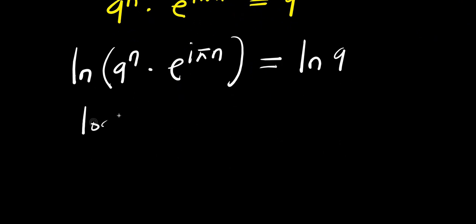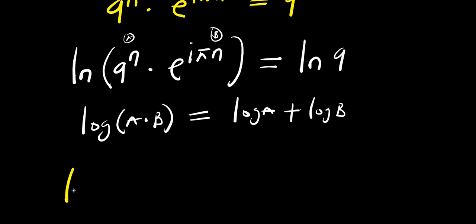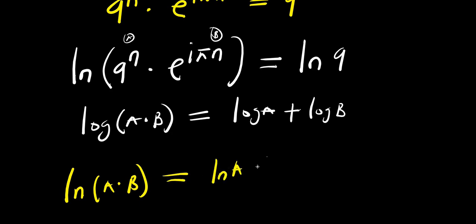If you have log of a times b, it equals log a plus log b. So natural log of a times b simply means natural log of a plus natural log of b.